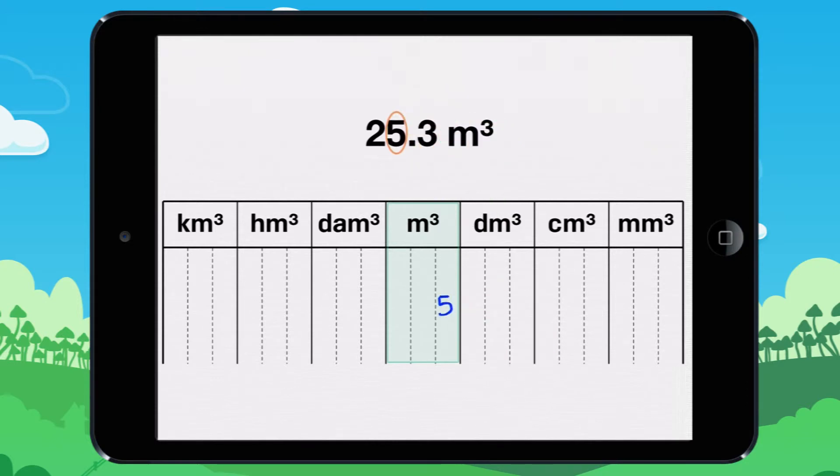Place the number before the decimal into the 1's column. Put a 5 into the cubic meters column, the column the farthest to the right.